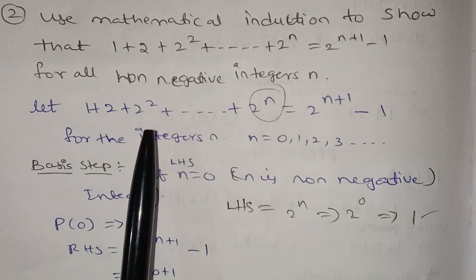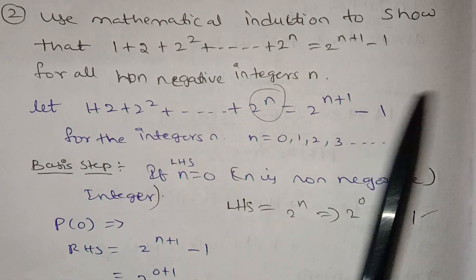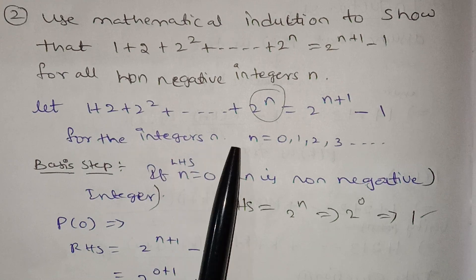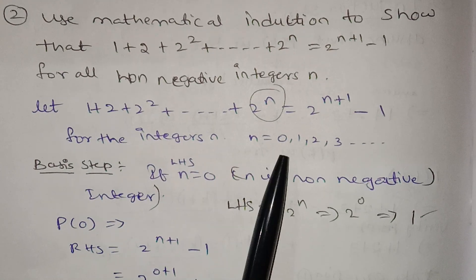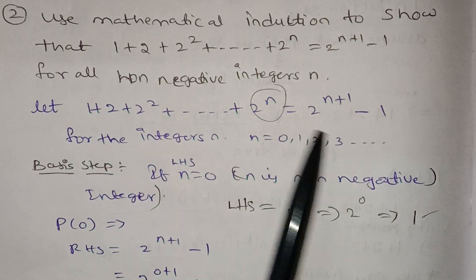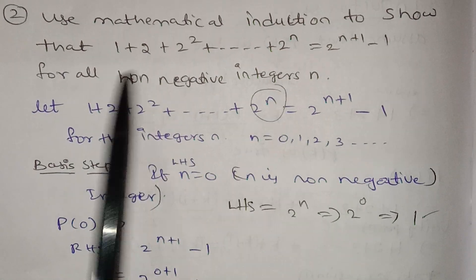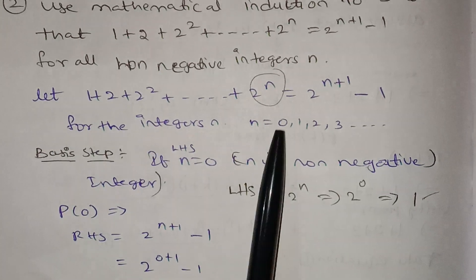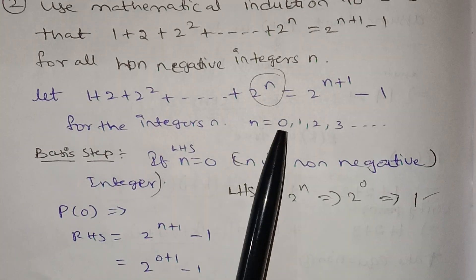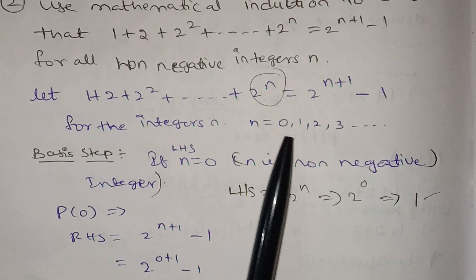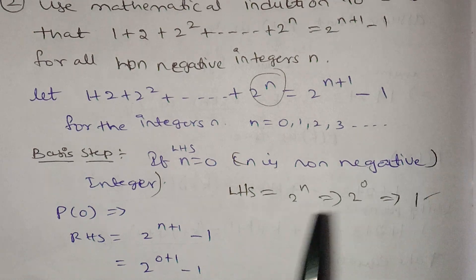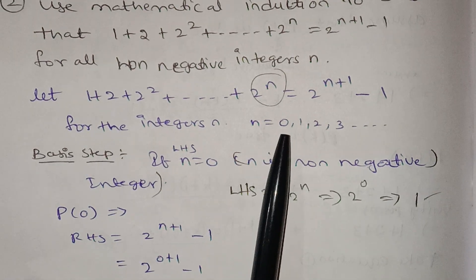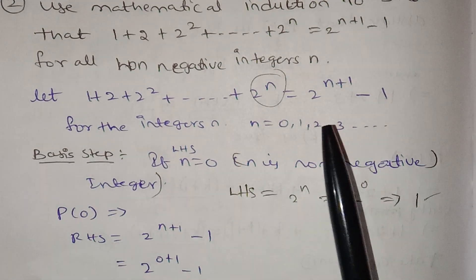We will prove it for non-negative integers n = 0, 1, 2, 3, ... This is the first step — one step in the ladder. First step: find the base case k.